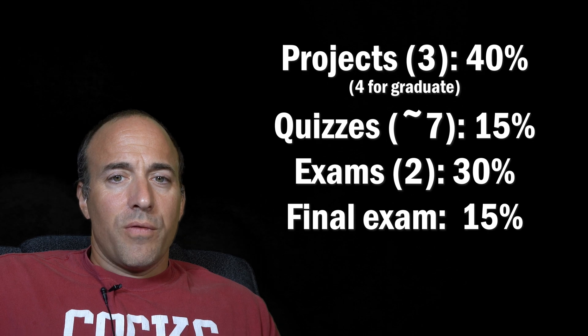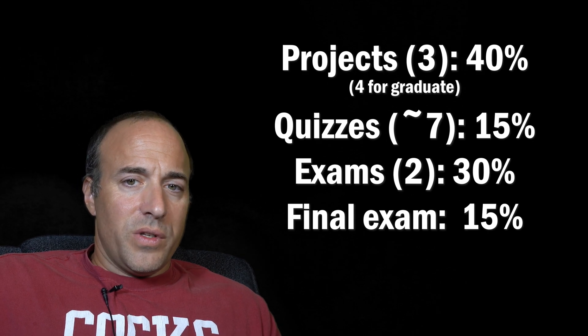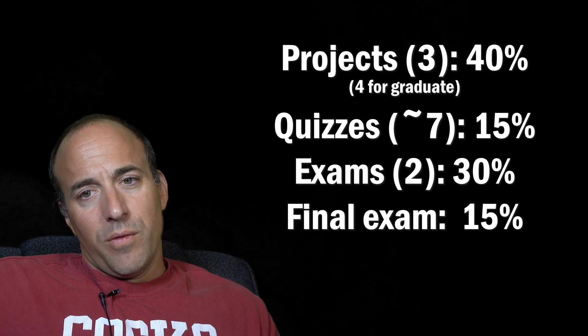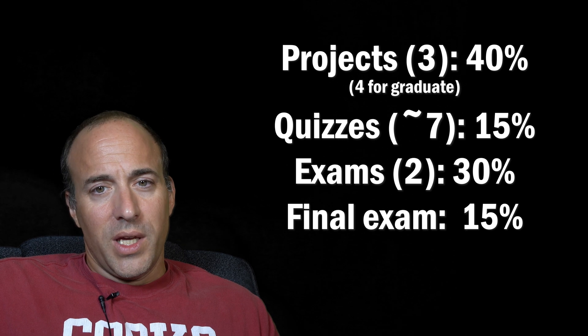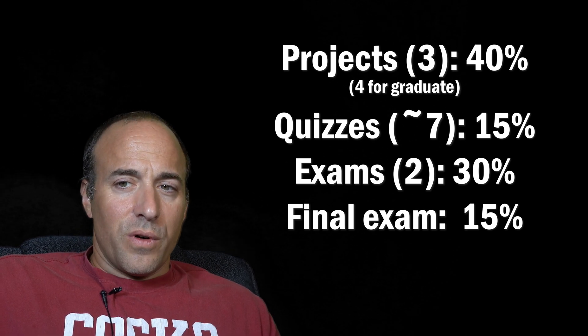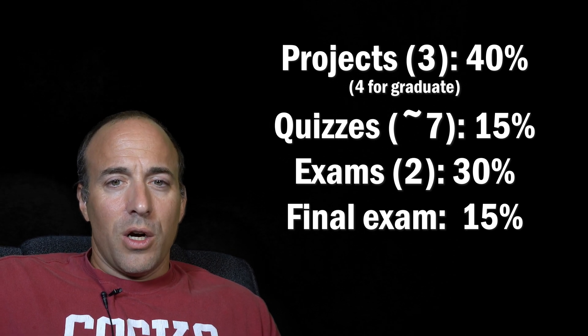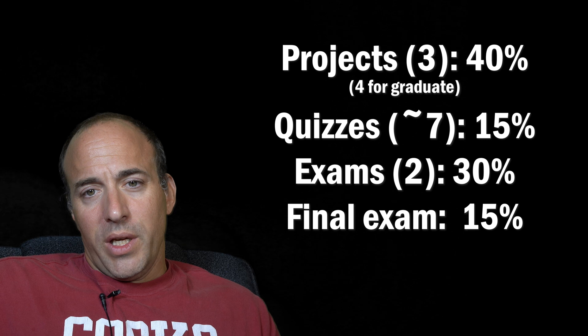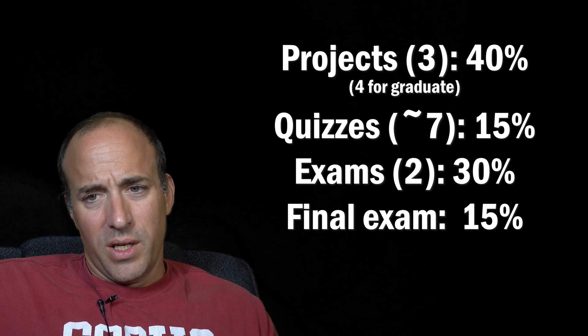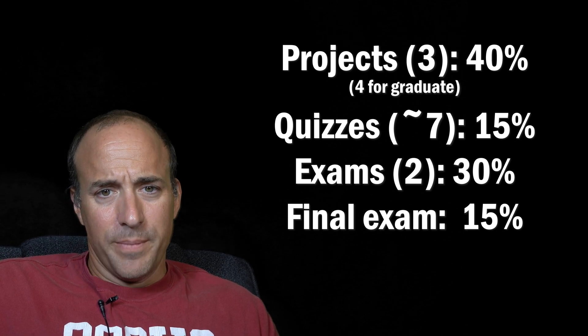The project grades will comprise 40% of the course grade for students taking the course for undergraduate credit, and 25% of the grade for students taking it for graduate credit. Students taking the course for graduate credit are required to complete a fourth project that comprises 15% of the grade.